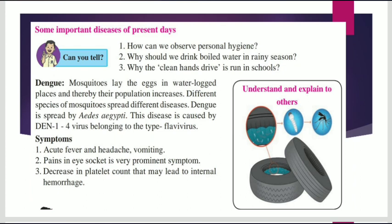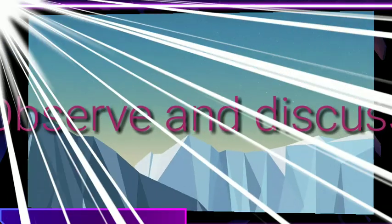Dengue is spread by Aedes aegypti. This disease is caused by DEN 1–4 virus belonging to the type Flavivirus. The symptoms of dengue include acute fever, headache, and vomiting. Pain in the eye socket is a very prominent symptom, along with a decrease in platelet count that may lead to internal hemorrhage.